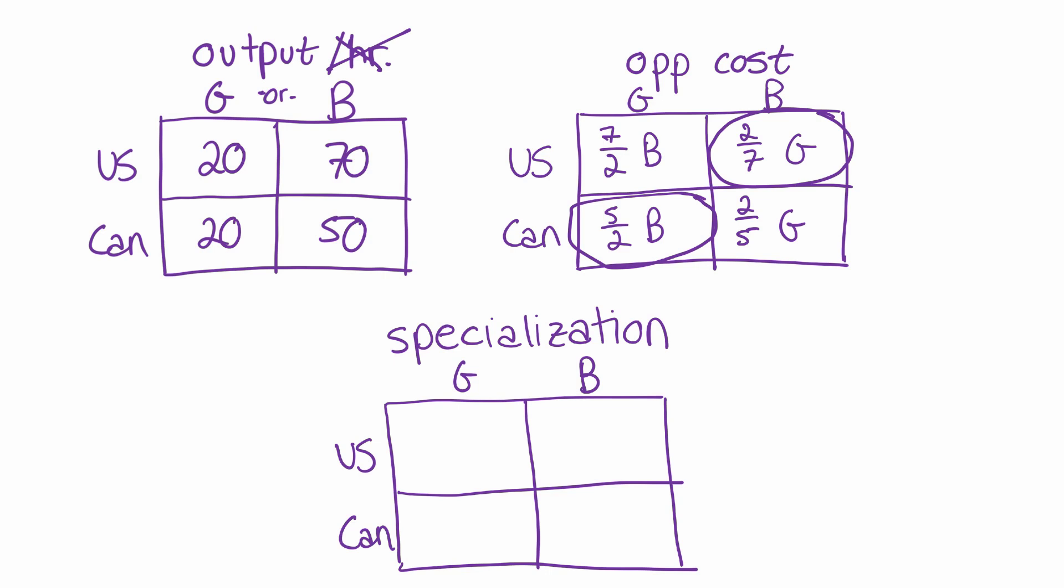If the US spends all of its time making butter, it can make 70 sticks of butter, but then no guns. We can also see that, according to comparative advantage, Canada is going to produce only guns. And if they do that, they're going to be making 20 guns and no butter.